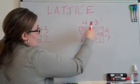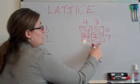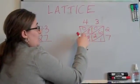Now, each one of these diagonal columns is a place value. This is the ones, this is the tens, the hundreds, and the thousands.